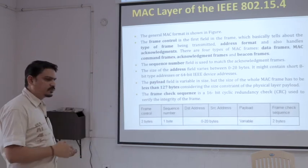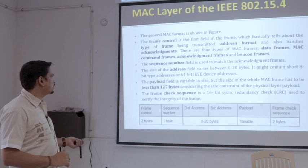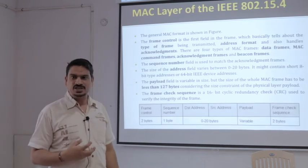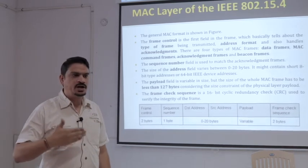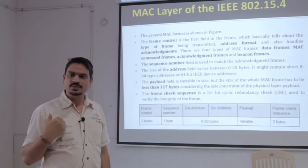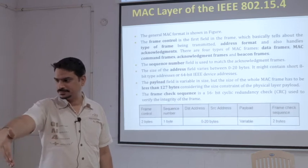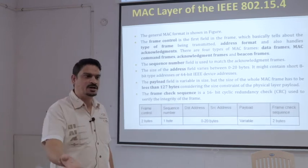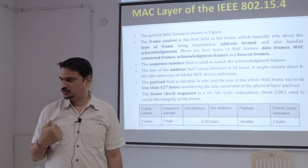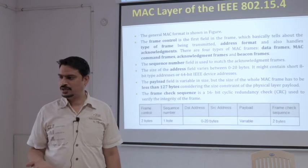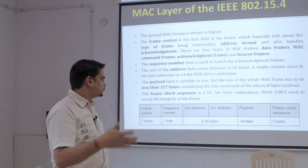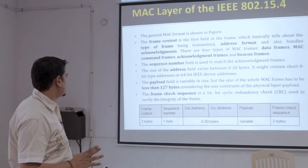After frame control, there is the sequence number field. The sequence number is used to match the acknowledgement frame. For example, if I am sending data 1, 2, 3, 4, 5, I am getting one acknowledgement — is that acknowledgement for data 1 through 5? Or sometimes if I send data 1 it sends acknowledgement 1, if I send data 2 it sends acknowledgement 2 — that is a different protocol. One byte is enough for this to tell us the sequence.